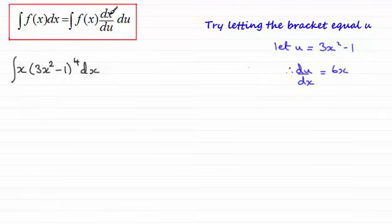Now, we want dx by du, not du by dx. So we use the reciprocal property. That is, dx by du is going to be exactly the same as 1 over du by dx. So in other words, 1 divided by 6x.